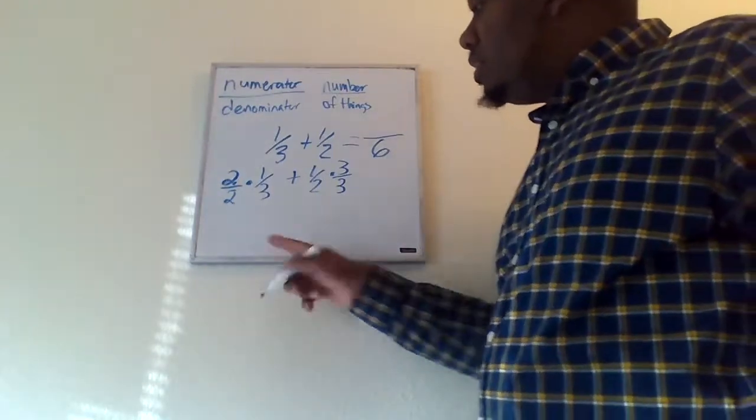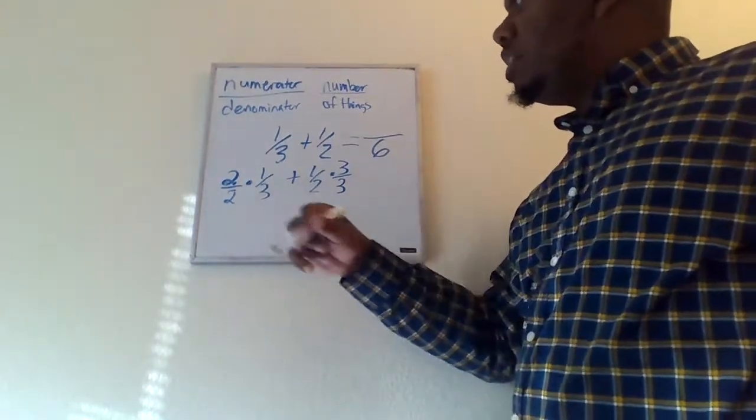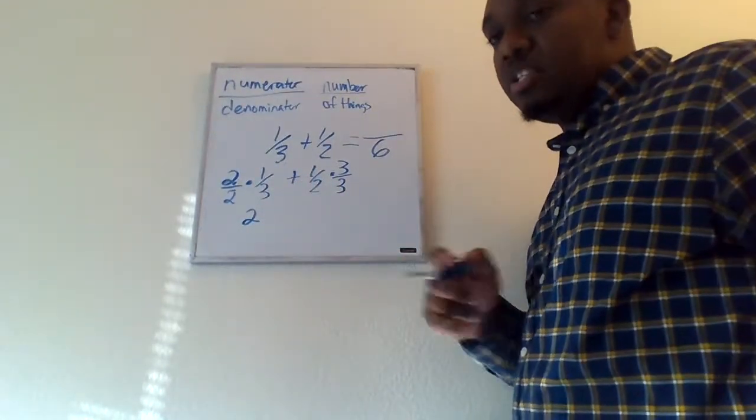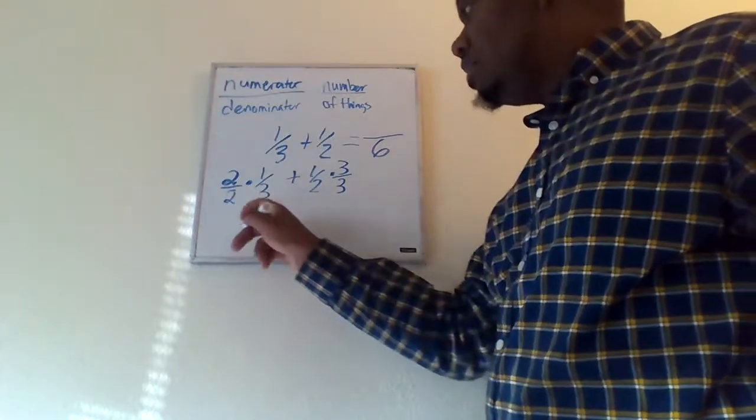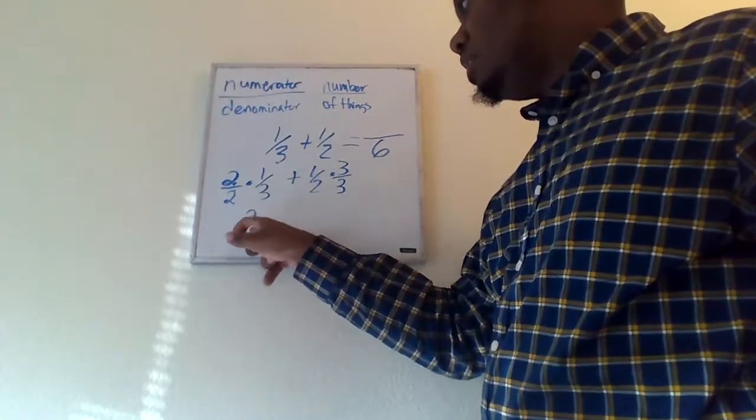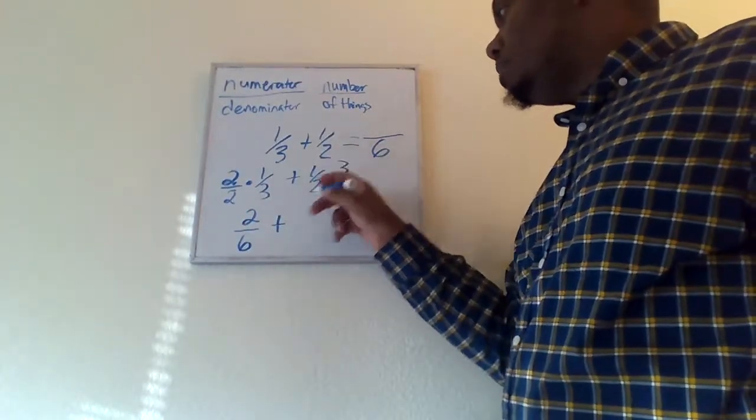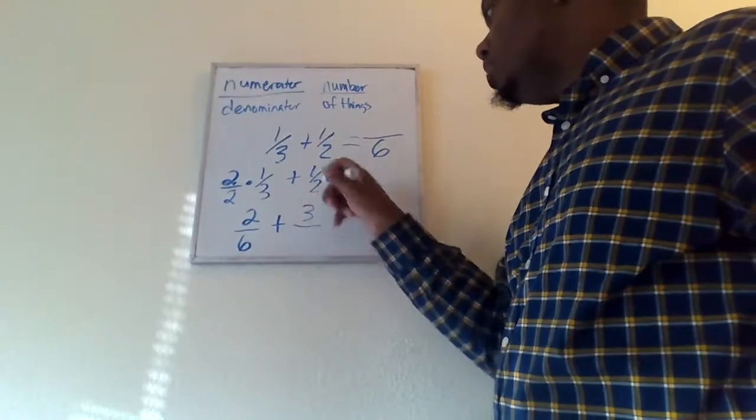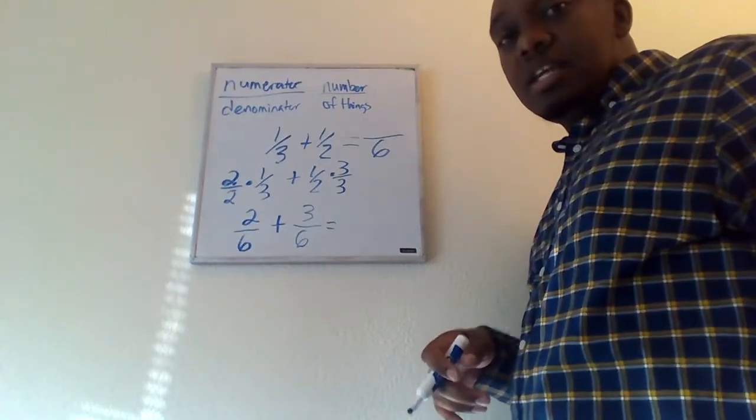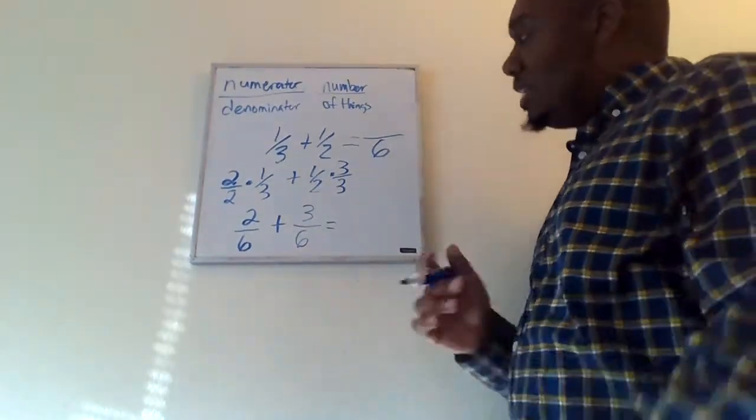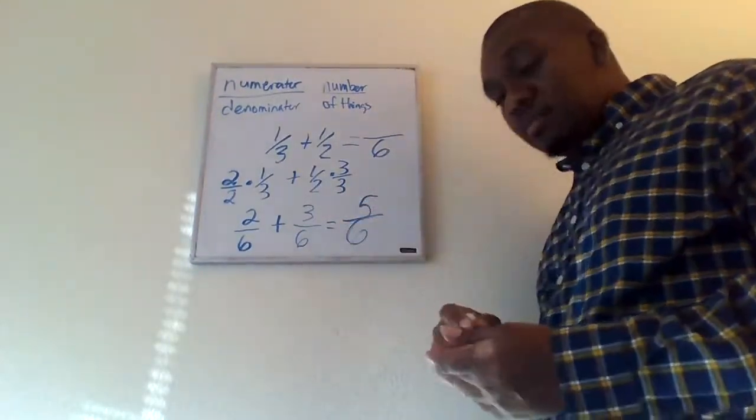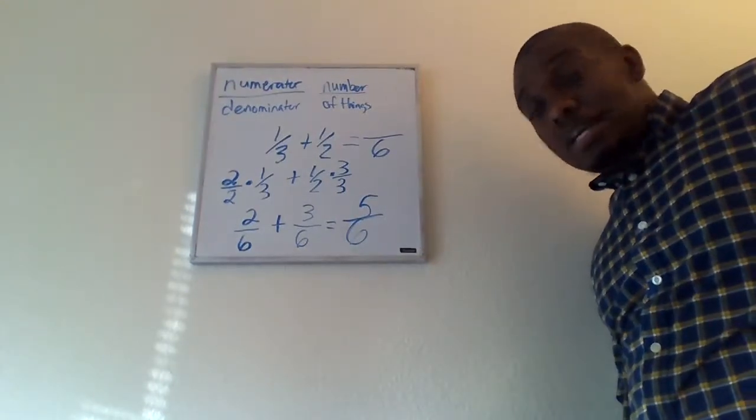Okay, so if we simplify this—or sorry, we find the equivalent here—two times one will be two. By just multiplying fractions, we talk about multiplying fractions, it's numerator times numerator, denominator times denominator. So two times one would give us two, two times three would give us six. Over here, one times three will give us three, two times three will give us six. So therefore we get two sixths plus three sixths. They are the same type of thing. We can add these together, and in the end we end up with how many sixths? Five sixths. That's it. That's quite simple.